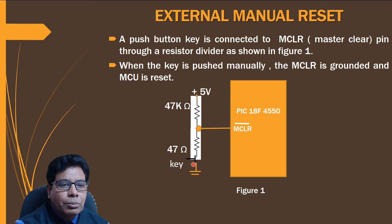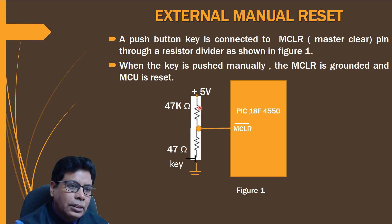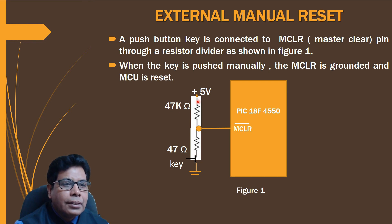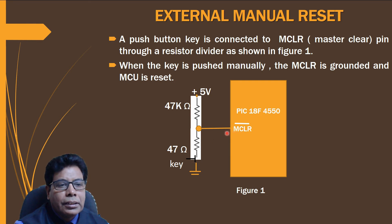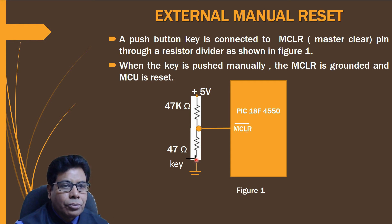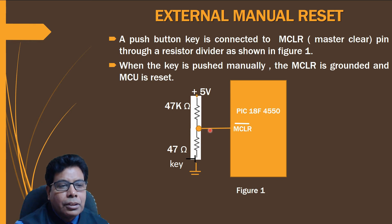For the external manual reset, a push button key is connected to the MCLR master clear pin via a resistor divider with 47 kilo-ohms and 47 ohms, with VDD at plus 5 volts. When the key is pushed, MCLR is grounded — current flows through the resistor path and the pin is pulled low, resetting the MCU.